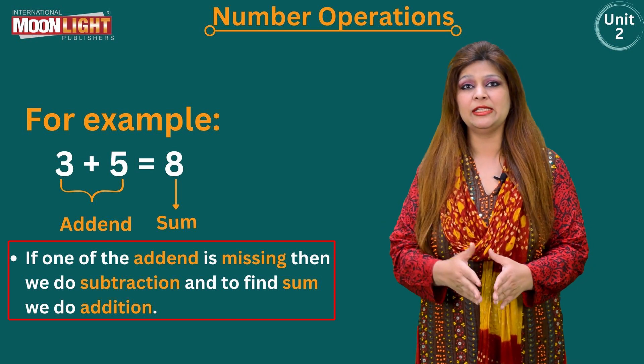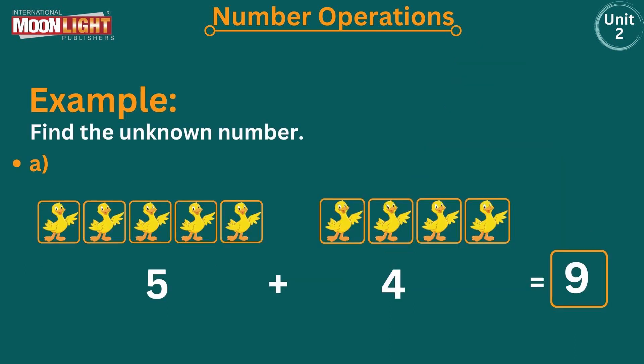Here is an example: find the unknown number. Part A asks how many ducklings are here. Count by yourself: one, two, three, four, five — there are five ducklings. So you are going to write the number five in the first empty box.